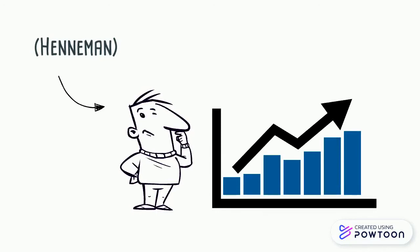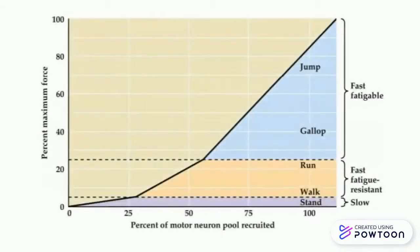Our slow motor units are activated first, then as synaptic activity increases, fast fatigue-resistant motor units are recruited, and finally fast fatigable motor units.